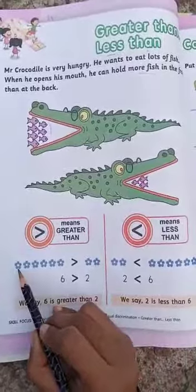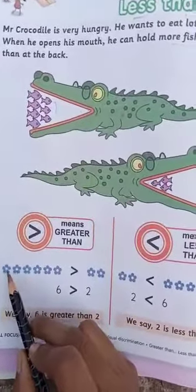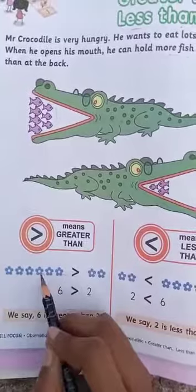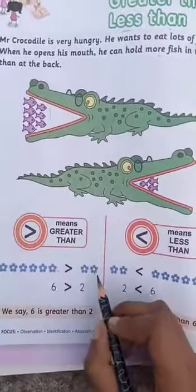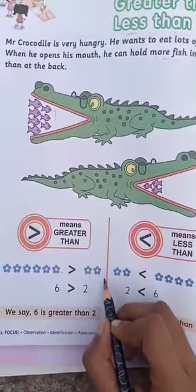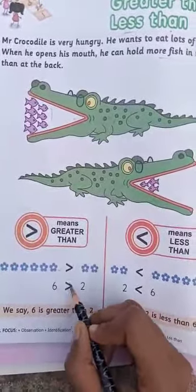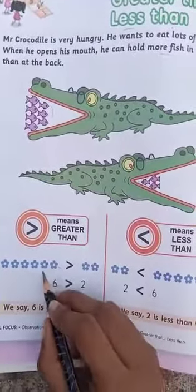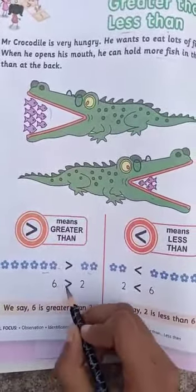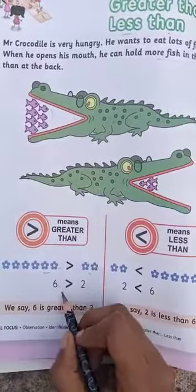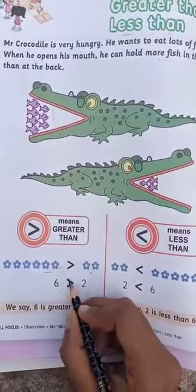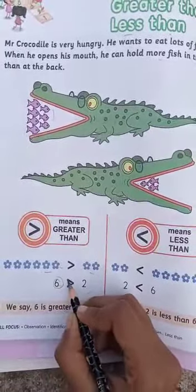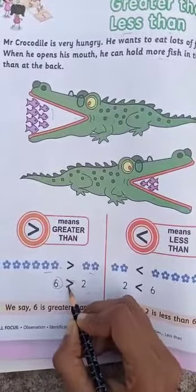Now look at this example. 1, 2, 3, 4, 5, 6 — this is 6 flowers, and this is 2 flowers. So 6 is greater than 2, and 2 is less than 6. The greater than sign: on the big number side, we always have an open mouth sign.